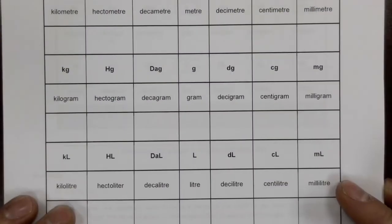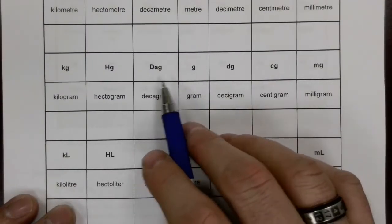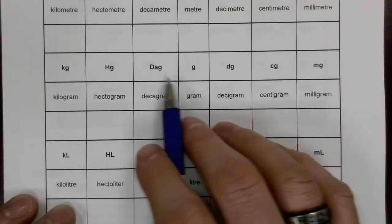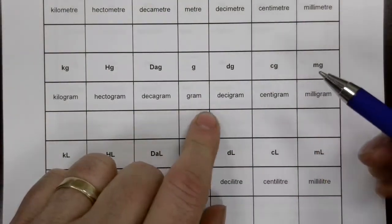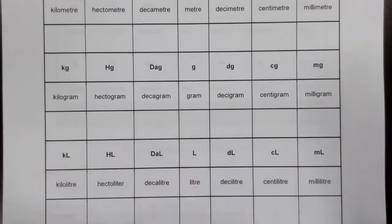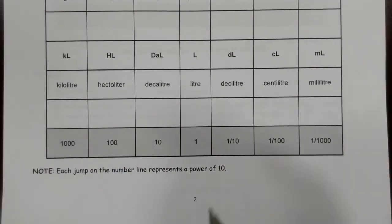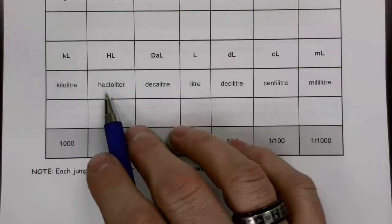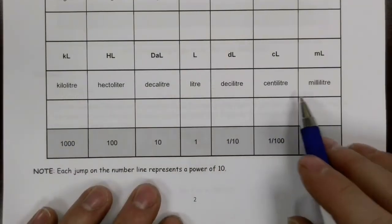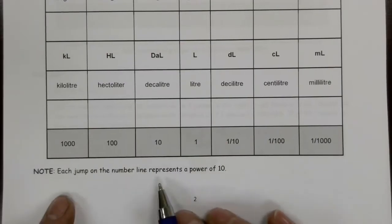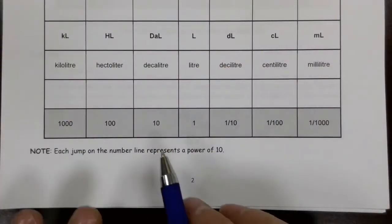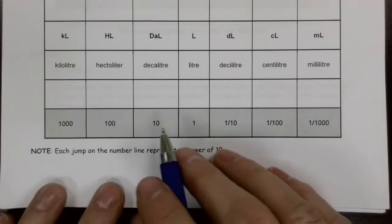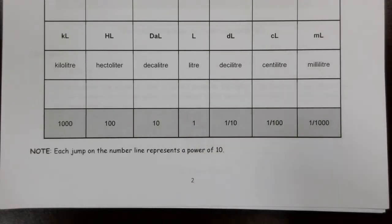For mass, the gram is the base unit. A decagram is 10 grams, a hectogram is 100 grams, and a kilogram is 1,000 grams. A decigram is a tenth of a gram, a centigram is a hundredth, and a milligram is a thousandth of a gram. We do the exact same thing with the base unit for volume — liters — giving us decaliter, hectoliter, kiloliter, deciliter, centiliter, and milliliter. Each jump on the number line represents a power of 10, which conveniently means just moving the decimal point one place per jump.